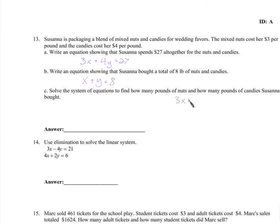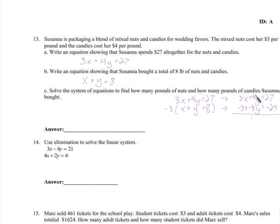Using elimination: multiply the second equation by negative 3, giving negative 3x minus 3y equals negative 24. Add to the first equation — the x's cancel, and 4y minus 3y equals y, so y equals 3. That means 3 pounds of candy. Since they add up to 8, that means 5 pounds of mixed nuts.